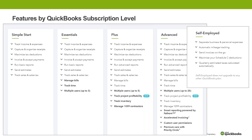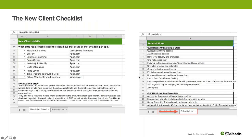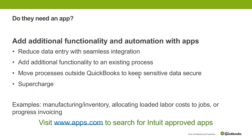One of the things we also have in that new client checklist is the additional requirements about adding an app. One of the things we often talk about is apps — cost is always a consideration, but there's a whole lot more to that conversation. The benefits of using an online application: small business clients can now have mid-market functionality using QuickBooks Online and apps. Reducing data entry with seamless integration is extremely important. Many times we find that people are just keying in information from one place to another, and we really want to eliminate that as much as possible.